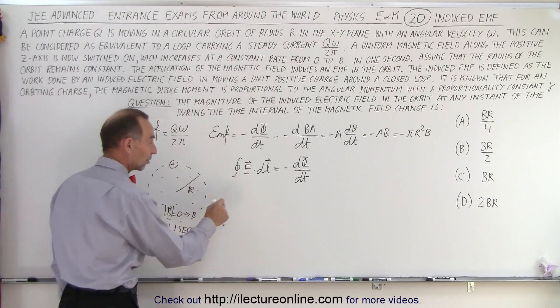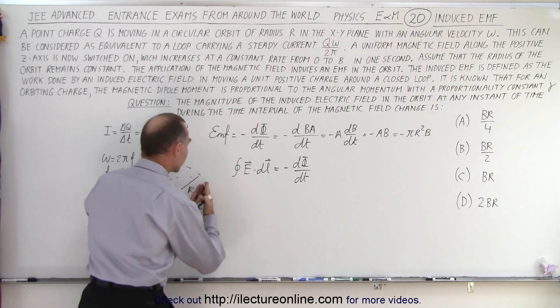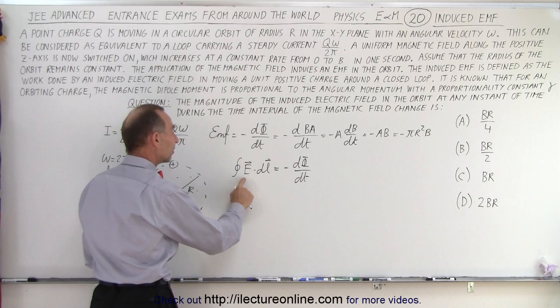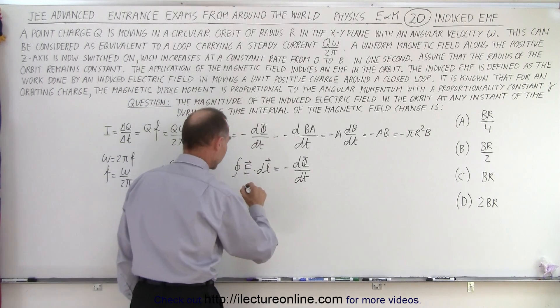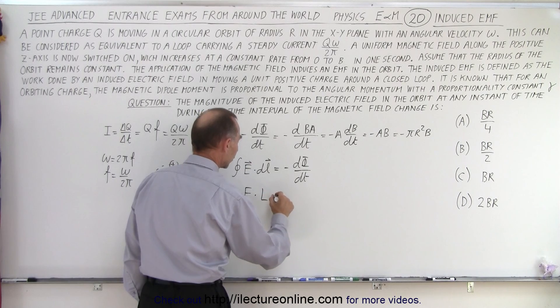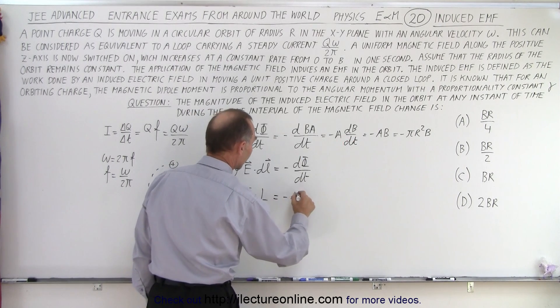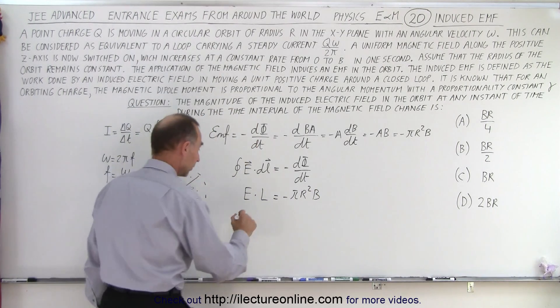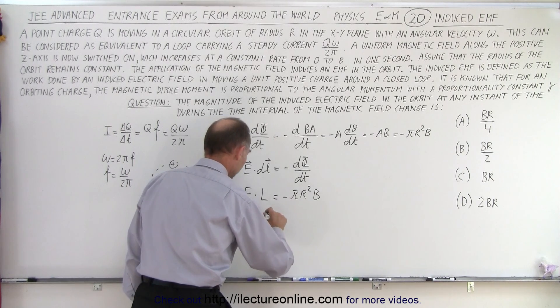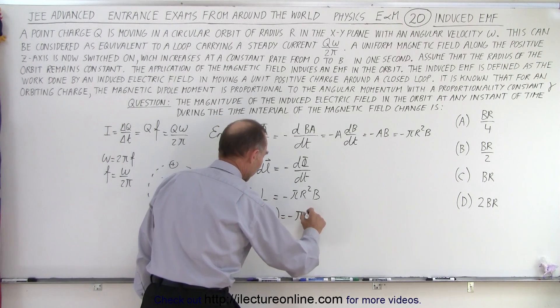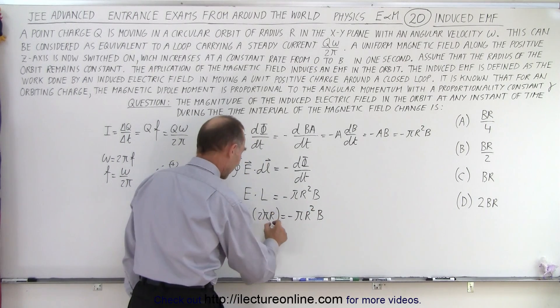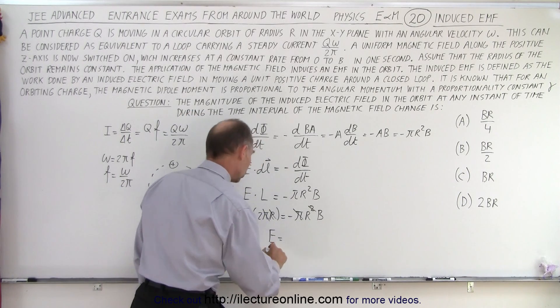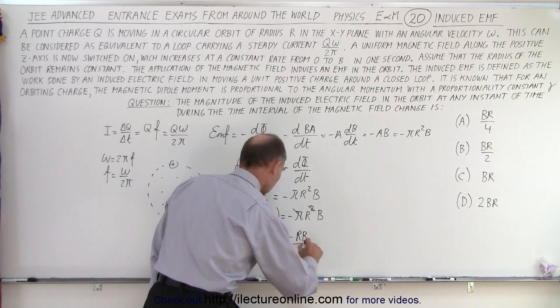And of course we are integrating around the loop and it's going to be uniform. The E field is going to be uniform along that loop, so that's essentially a constant. dl will be in the same direction. Therefore we can say that it's simply E times L, the length of the loop. So this is E times L, the length of the loop, and this is equal to minus πr²B. And the length of the loop of course is 2πr. It's going around once so that's E times 2πr is equal to minus πr²B. And then notice that the π's cancel out and one of the r's cancel out. That means that E is equal to minus rB over 2.